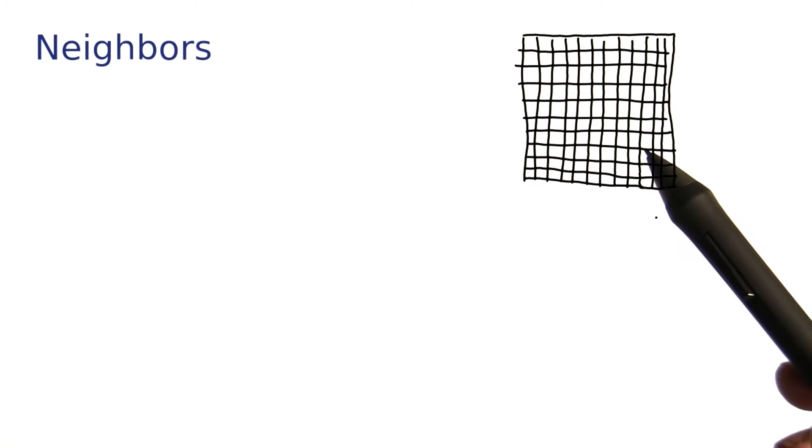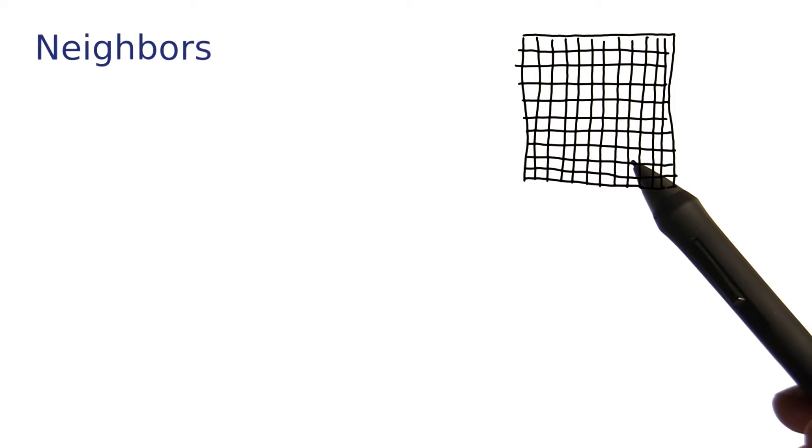When you have a picture, you can think of it as a giant two-dimensional array of colors. It's a little tedious to work with the colors, because they have red, blue, and green components.